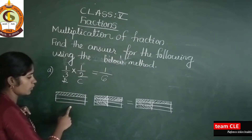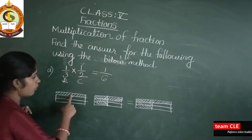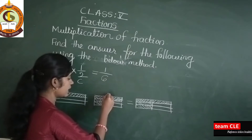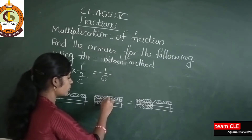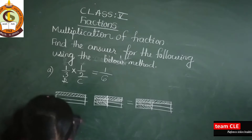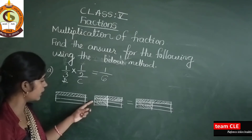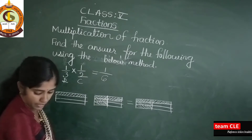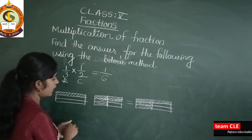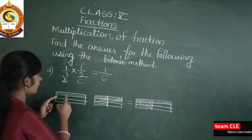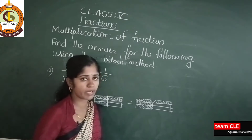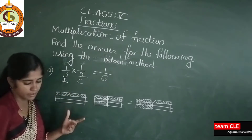1/3 means rows: 1, 2, 3 — 3 rows, and I have shaded 1. For 1/2, already here 3 rows are there, and I made 2 columns, so total is 6 parts. So you shade this and this part — there is no need to shade the other part. So 1/3 into 1/2, the answer is 1/6. This is how you have to solve it.